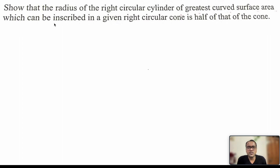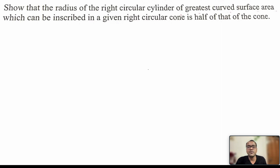Show that the radius of right circular cylinder of greatest curved surface area, which can be inscribed in a given right circular cone, is half of that of cone. Read this question properly and understand it. We have to show that the radius of the right circular cylinder of greatest curved surface area, inscribed in a right circular cone, means the cylinder's radius is half of the cone's radius.